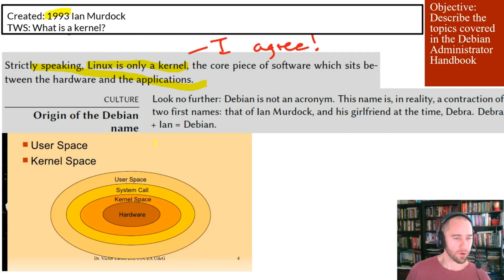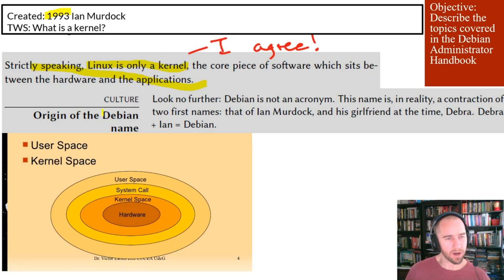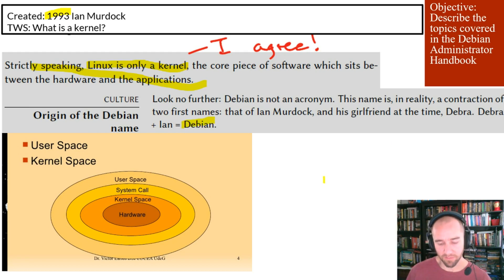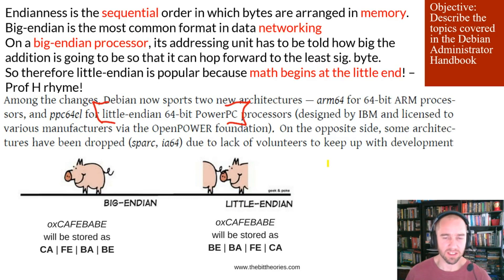Here's a picture of a kernel just to bring it home. And now for you to always remember where the name came from: Ian decided to take his girlfriend at the time, Deborah or Debbie, and take his name and her name and combine it. And thus we have Debian. So version 8 being Jessie — maybe that's why they decided to go with a girl's name.